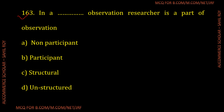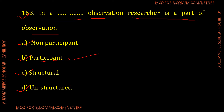Question number 163: In which type of observation is the researcher a part of the observation? The options are non-participant, participant, structural, and unstructured. The correct answer is participant observation — in participant observation, the researcher is a part of the observation. Option B is the correct answer.